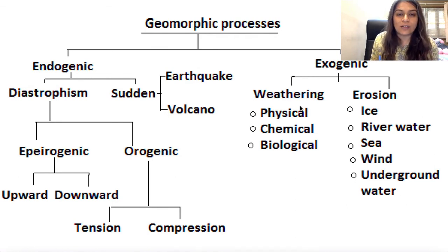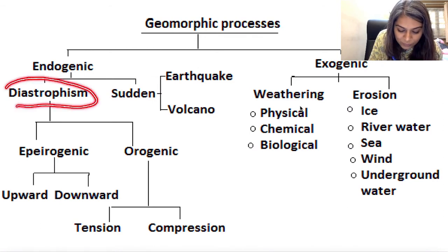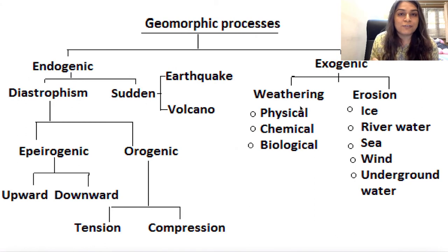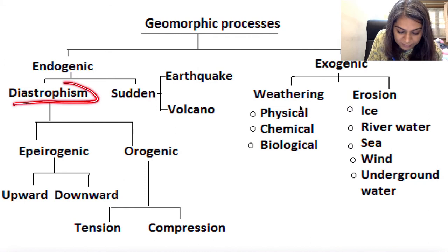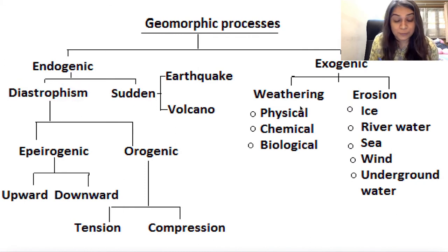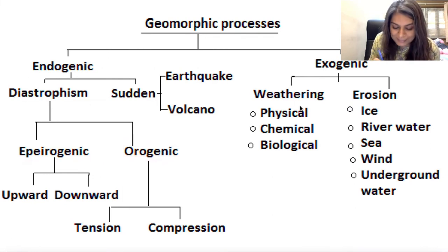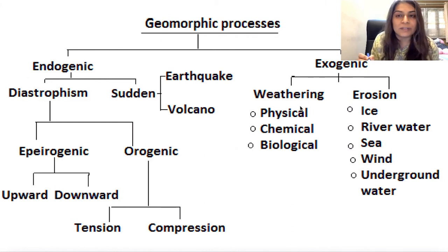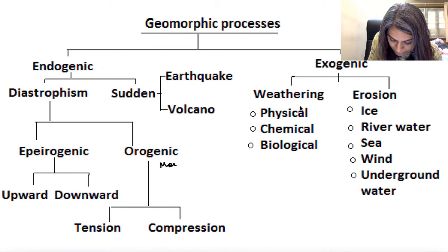We have already done the revision of how earthquakes and volcanoes happen, so I'm not going to repeat it. In diastrophism, there are again two types of movements: one is epigenic movement and one is orogenic movement. Orogeny is basically mountain building — orogenic movements are responsible for the building of mountains.